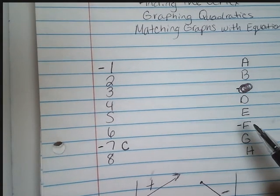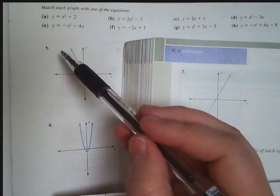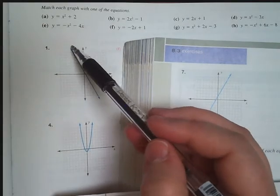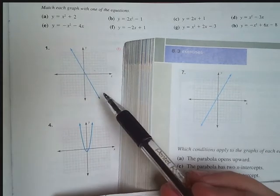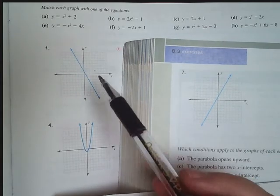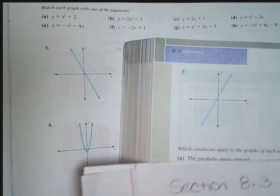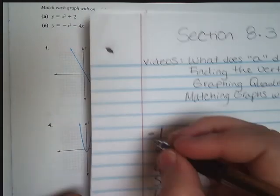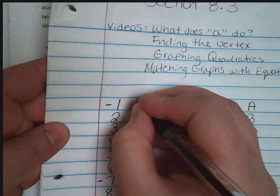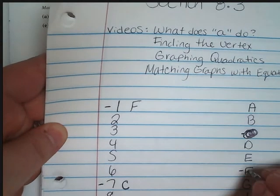That means that number one should be F. Now let's check. Do the slopes match? Number one starts up here and it goes in that downward direction. That's a negative statement. So F is going to be our answer here. We're gonna put an F for number one and cross it out.